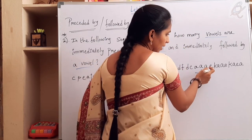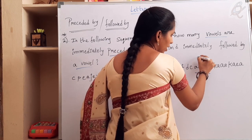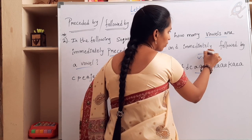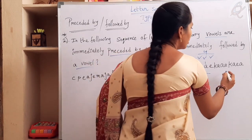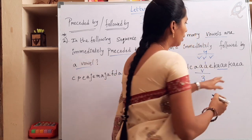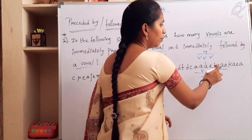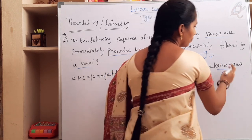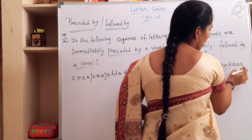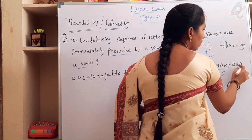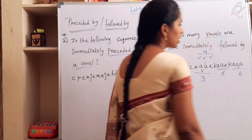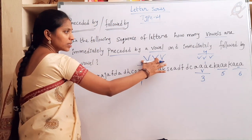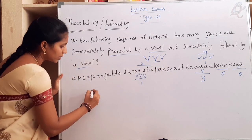Next, take this A — it is a vowel and previous letter and after letters are vowels, so fourth one. Then triple A — previous and after letters are vowels, condition satisfied: fifth instance. Next, E — previous and after letters are vowels, so this is the sixth one. There are six possibilities satisfying this condition. Answer is six.